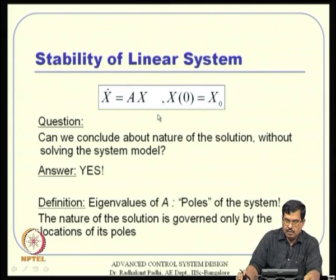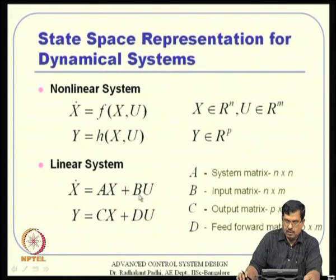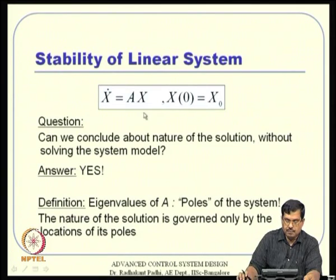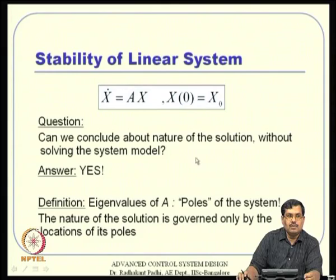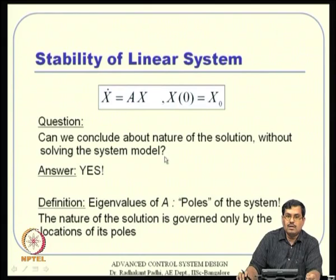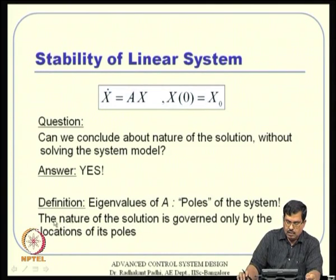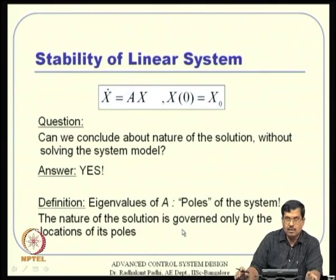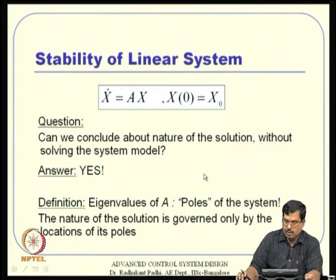Regarding stability of a linear system: when we talk about stability we do not talk about control input per se; we concentrate on x-dot = Ax. The question is can we conclude about the nature of the solution without solving the system model. Fortunately, the answer is yes, and it is given by the location of the eigenvalues. By definition, eigenvalues of the A matrix are known as poles of the system, and the nature of the solution is governed only by the location of the poles. If all poles are in the left half plane the system is stable; otherwise it is unstable.